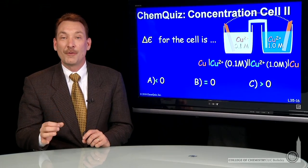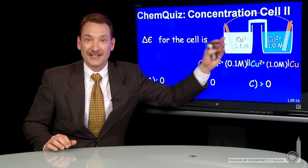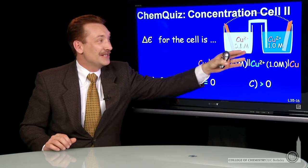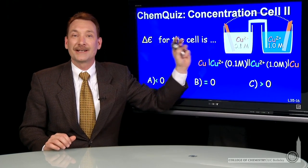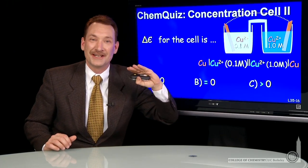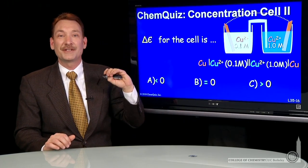Let's look at a galvanic cell where we use concentration difference instead of two different cell components. So on each side, we have a copper ion copper metal half cell. The only difference is the concentration on each side.